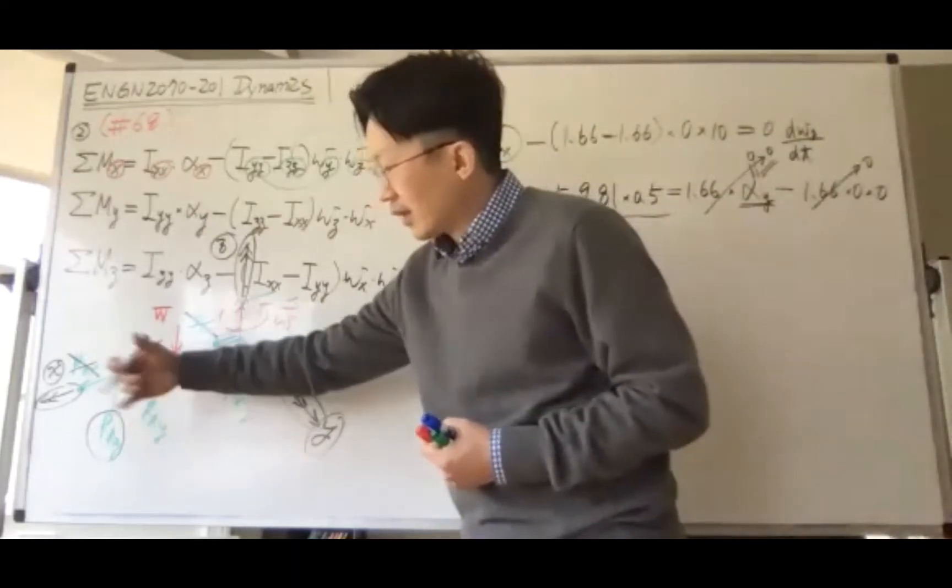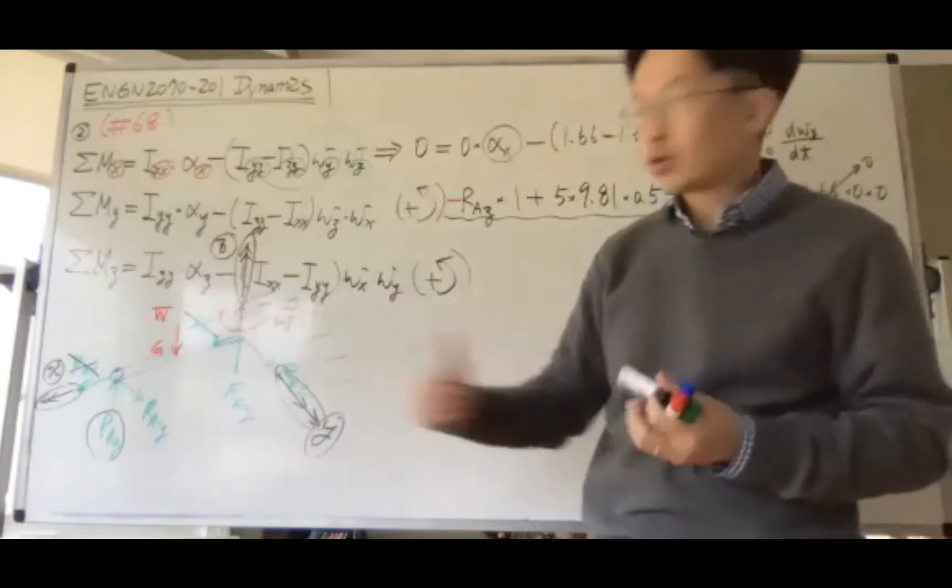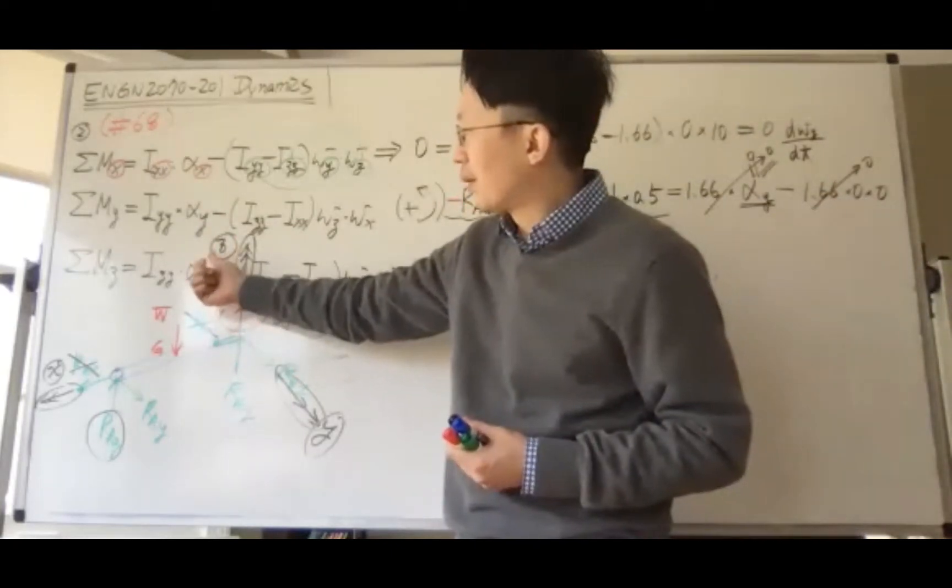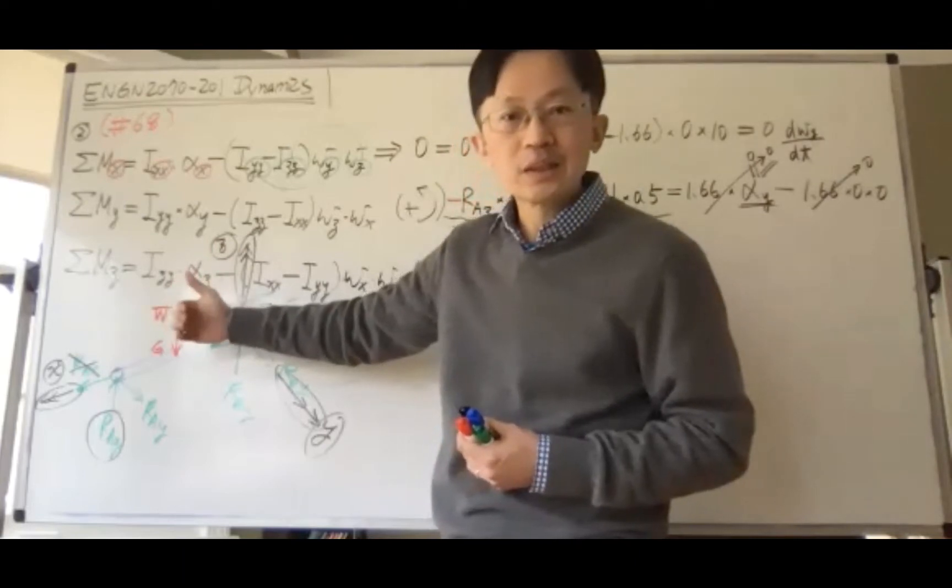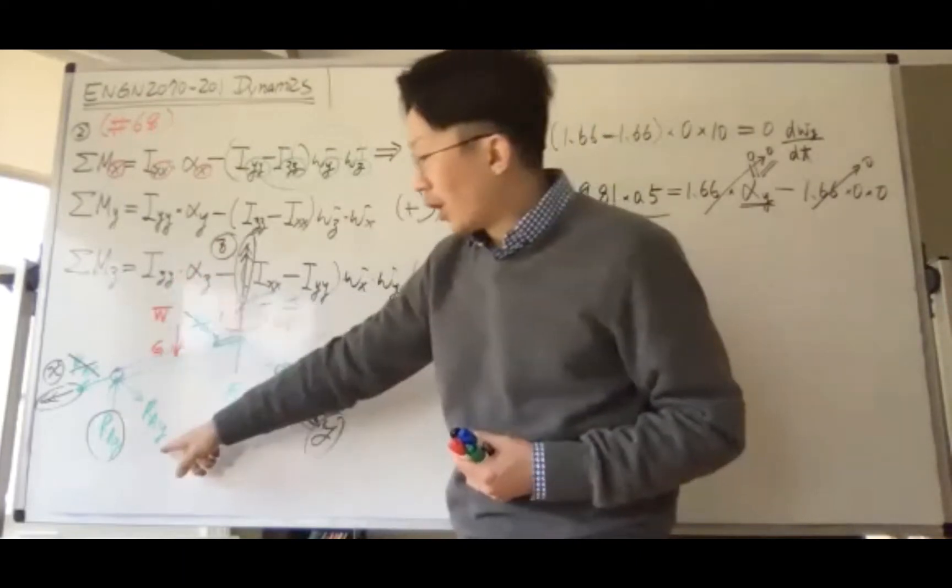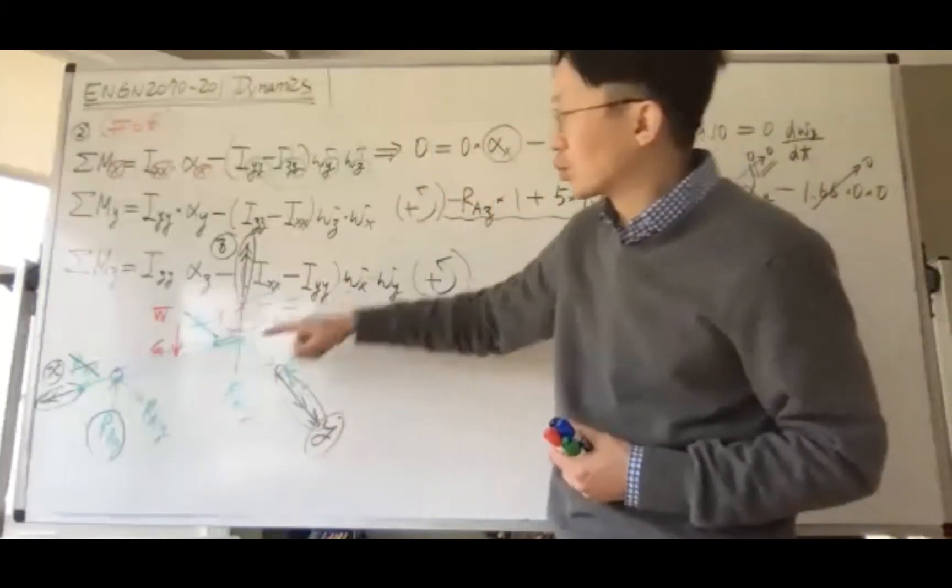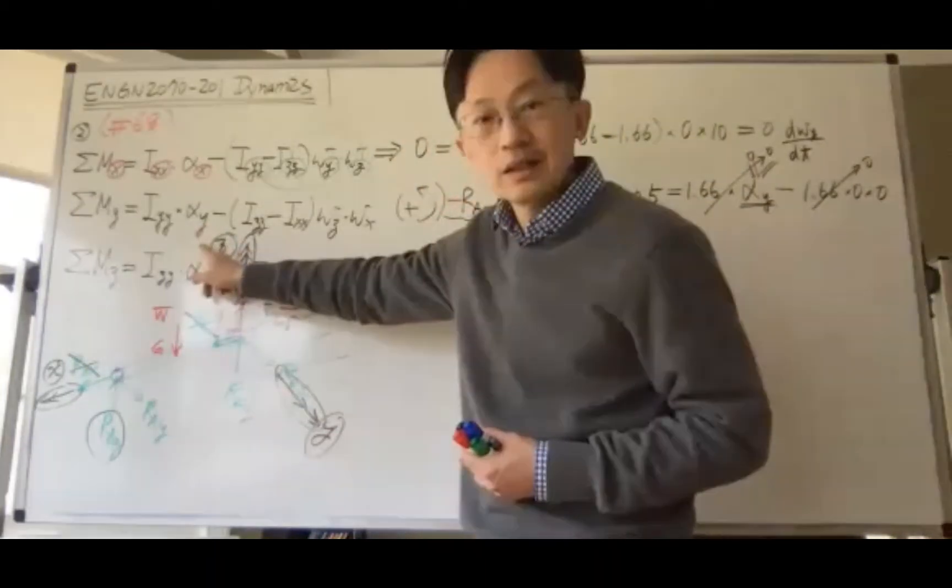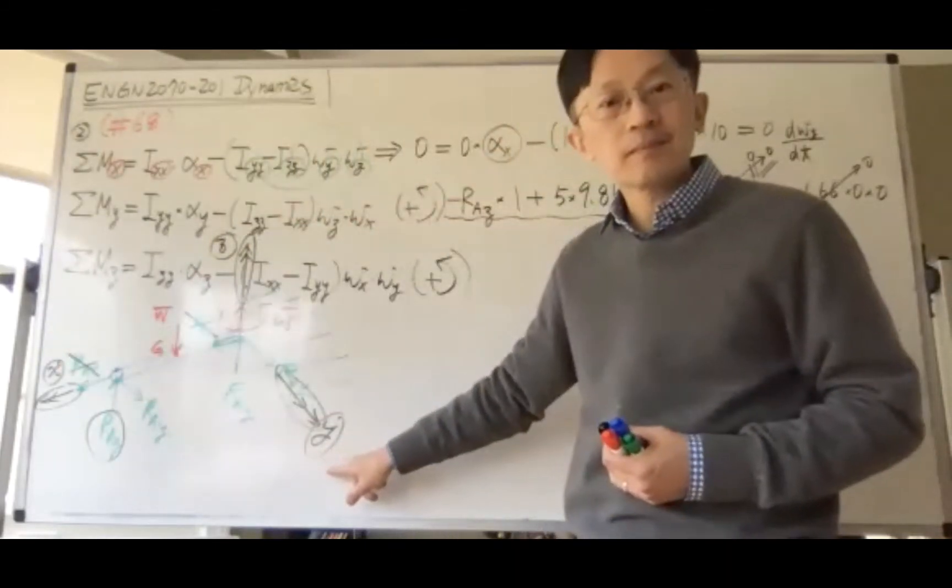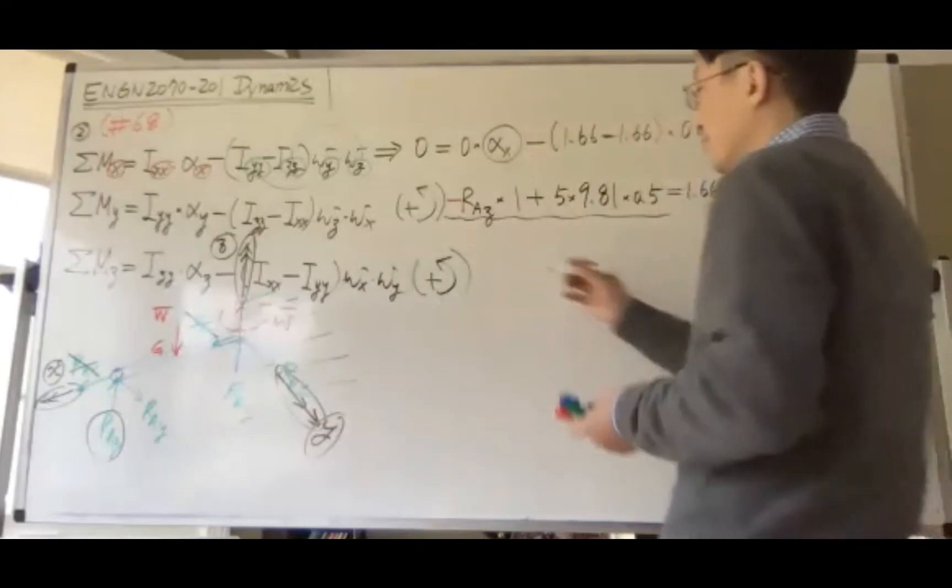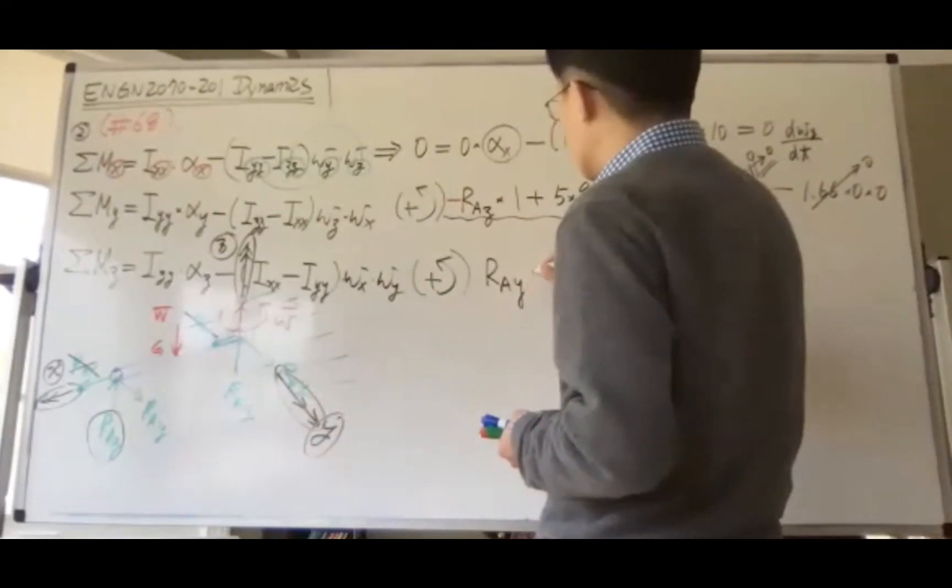Use your thumb to align with the positive direction of z, and your four fingers will tell you the positive direction. R_ay will produce counterclockwise rotation with respect to the z-axis on the xy plane, so the first term is positive R_ay times the total length.